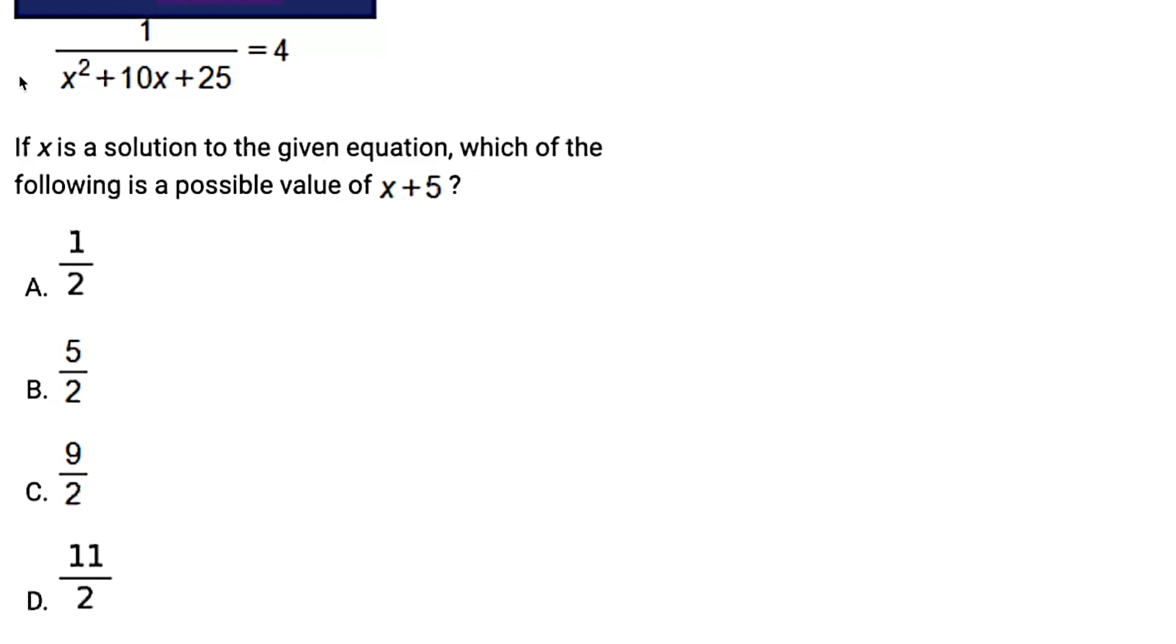Basically, we are trying to find a possible value of x plus 5. So somehow we need to change this mess so that something equals x plus 5. That's the route that I would go anyway. There's the option of solving for x first, but why would you do that when you can try to solve for x plus 5?